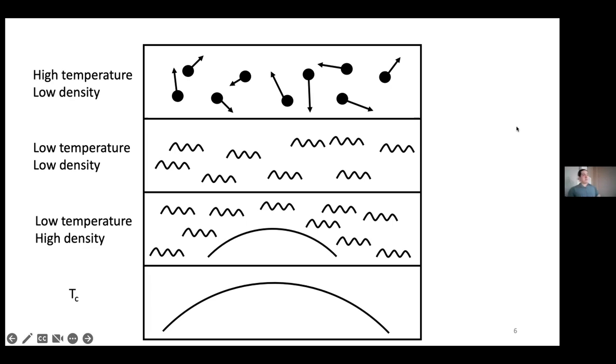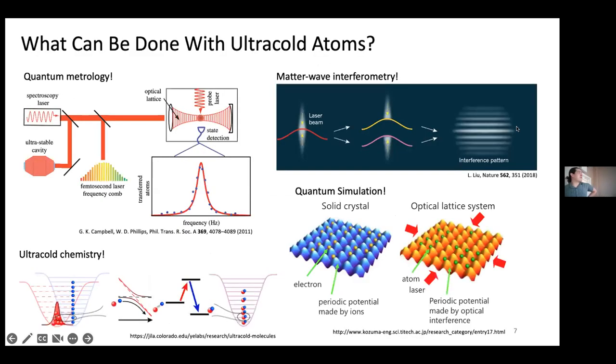OK, we've made this ultra-cold system. Great. Now, what do we do with it? The answer is a lot of really crazy cool stuff. So one thing we can do is quantum metrology. So quantum measurement and sensing. One great example of this is atomic clocks, which are basically the most precise timekeeping instruments that exist on the planet.